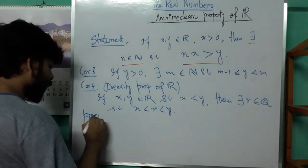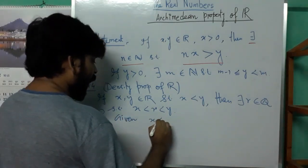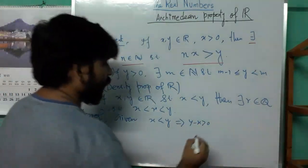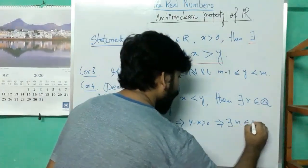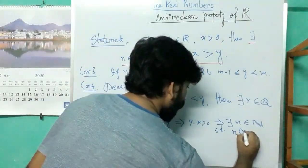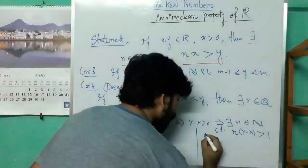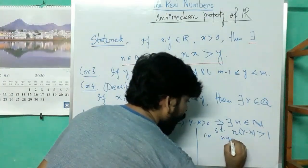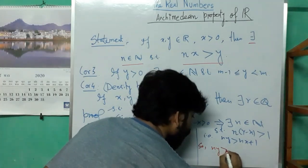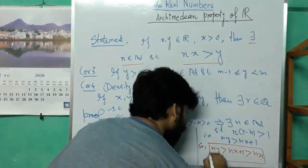Proof: given that x < y, so y − x is positive. By the Archimedean property there exists a natural number n such that n·(y − x) > 1. That is n·y > n·x + 1, which is strictly greater than n·x.